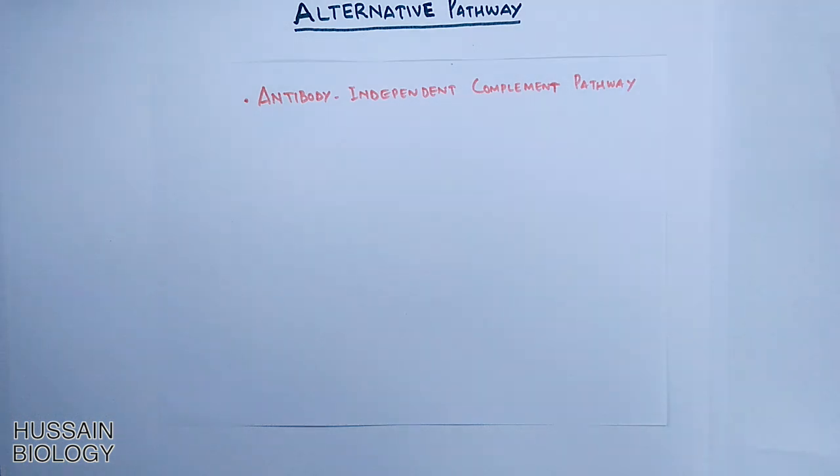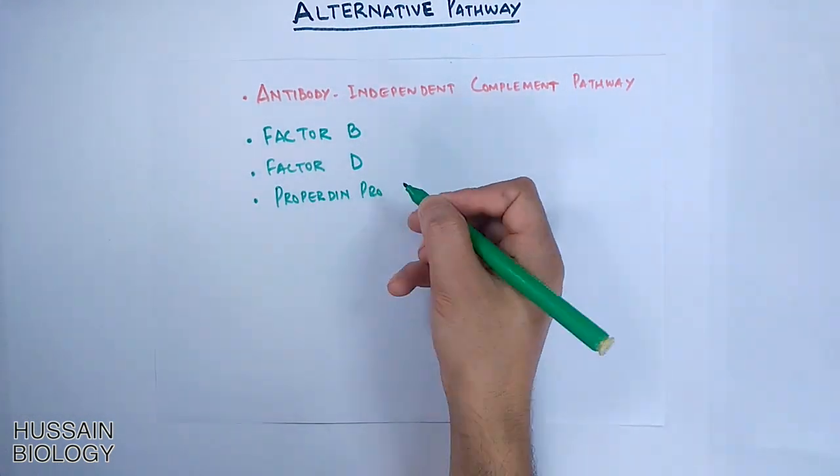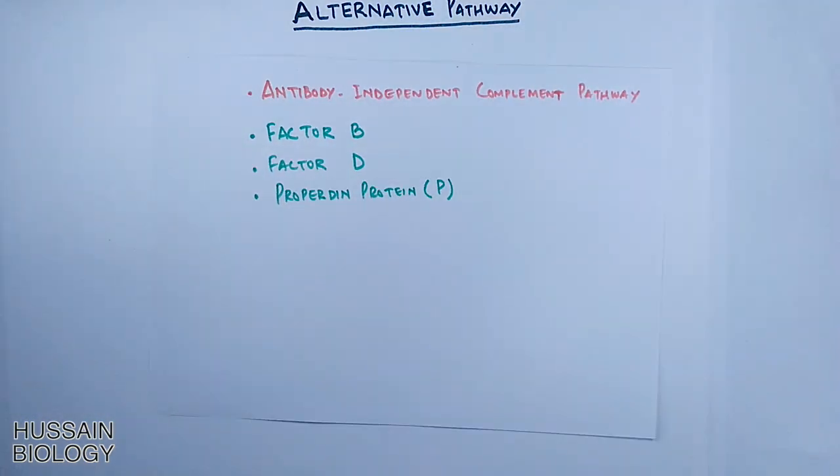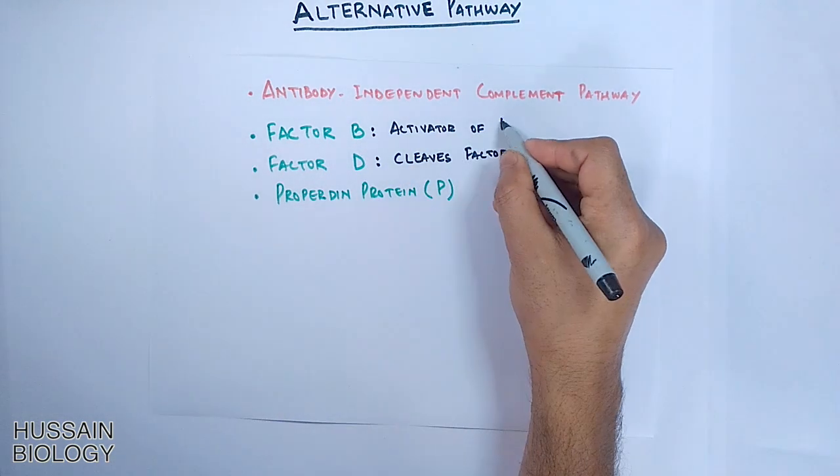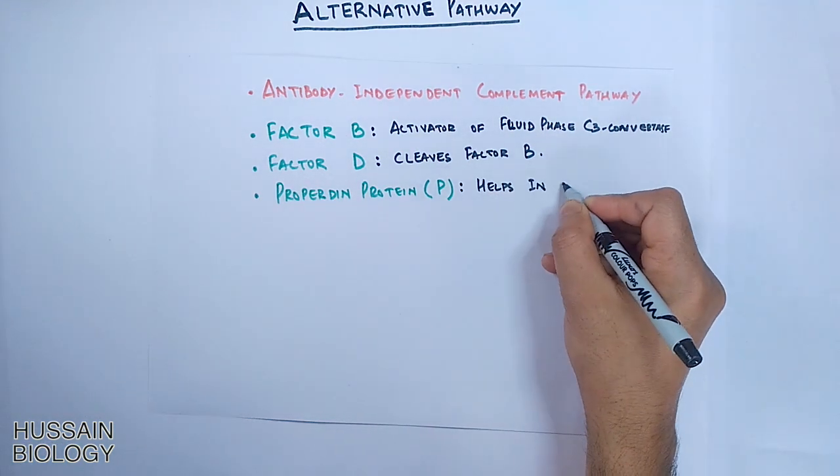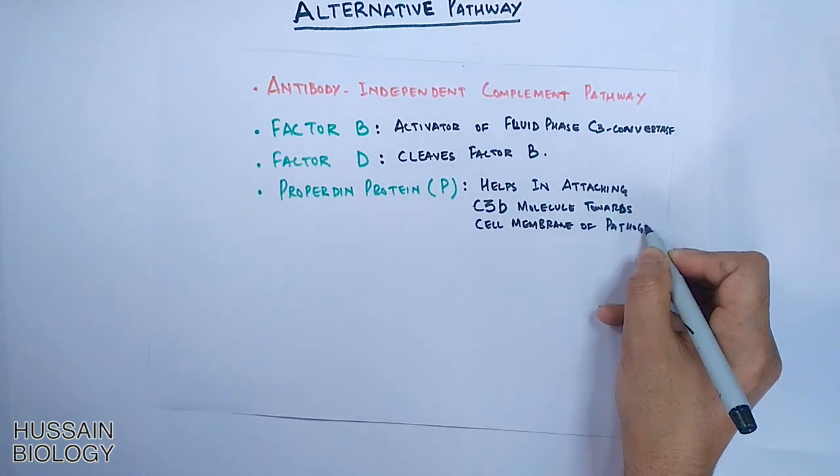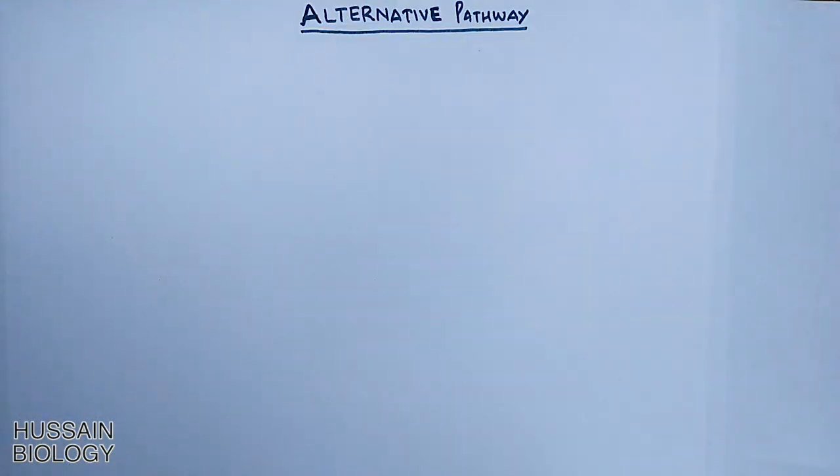We need three components: we need Factor B, we need Factor D, and we need a Propertin protein. The Factor D cleaves Factor B, and from this Factor B we get Bb which is the part of fluid phase convertase. Propertin molecule helps in attaching the C3b molecule towards the cell membrane of pathogen.